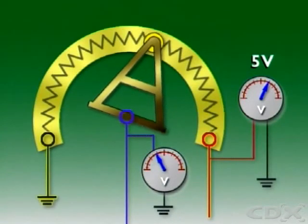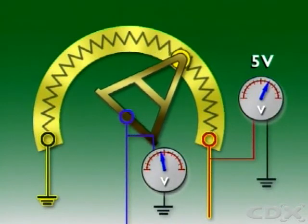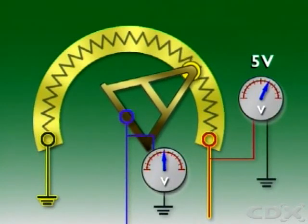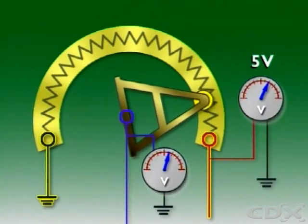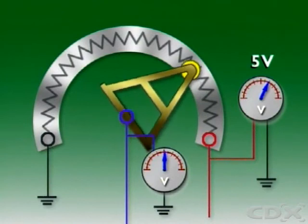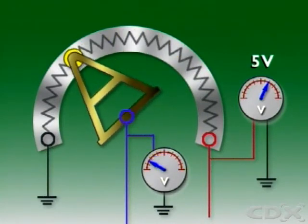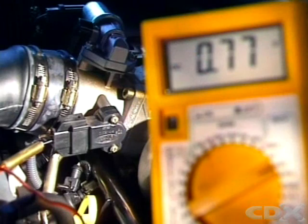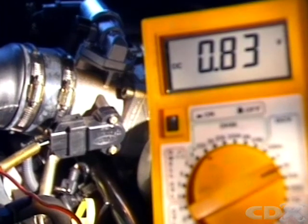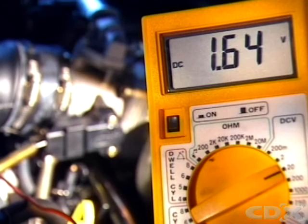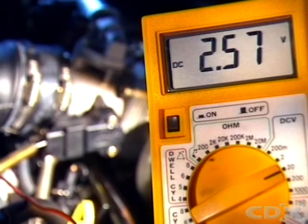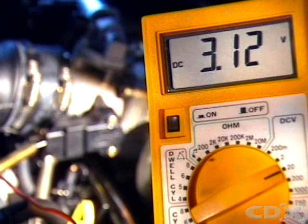The sensor then works like a variable resistor. As the angle of the throttle valve changes, so does the voltage signal along the third wire. At closed throttle, the reading is usually below 1.25 volts. As the throttle valve opens, the voltage signal rises. At wide open throttle, it's about 4.5 volts.